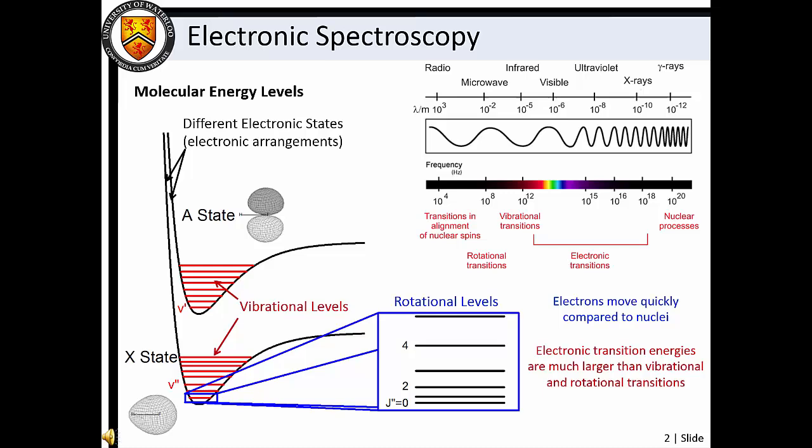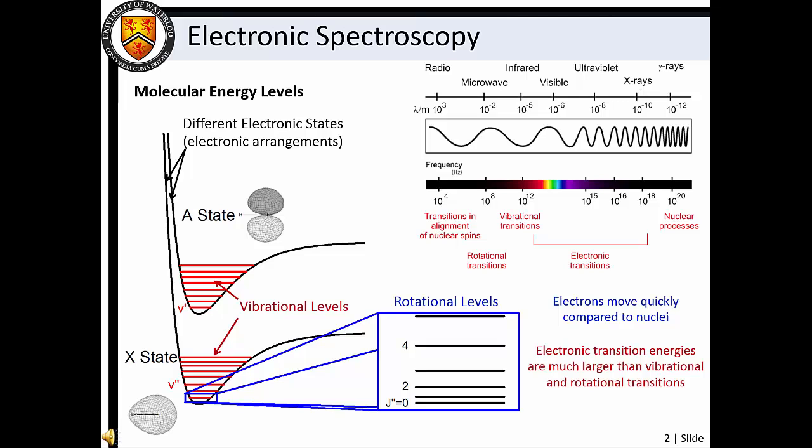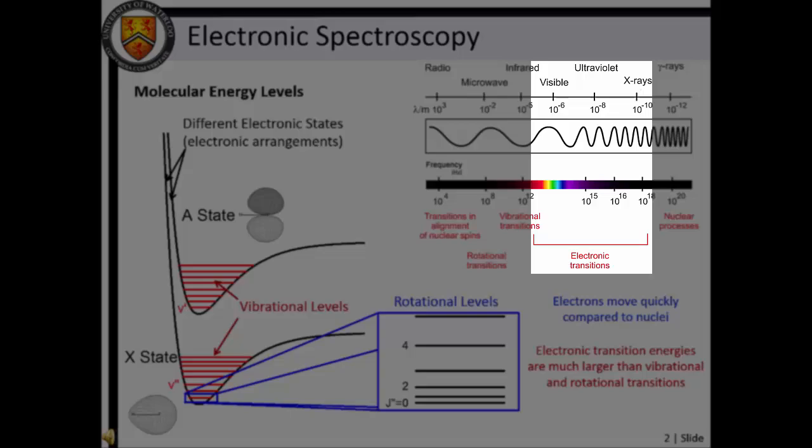To this point in Chemistry 209, we have focused on molecular transitions that occur between rotational and or vibrational energy levels associated with a single electronic state. However, it is possible for molecules to undergo transitions to ro-vibrational levels associated with a different electronic state. Electronic transitions are usually much higher in energy than vibrational and rotational transitions. Thus, electronic transitions typically occur in the visible or ultraviolet regions of the electromagnetic spectrum.